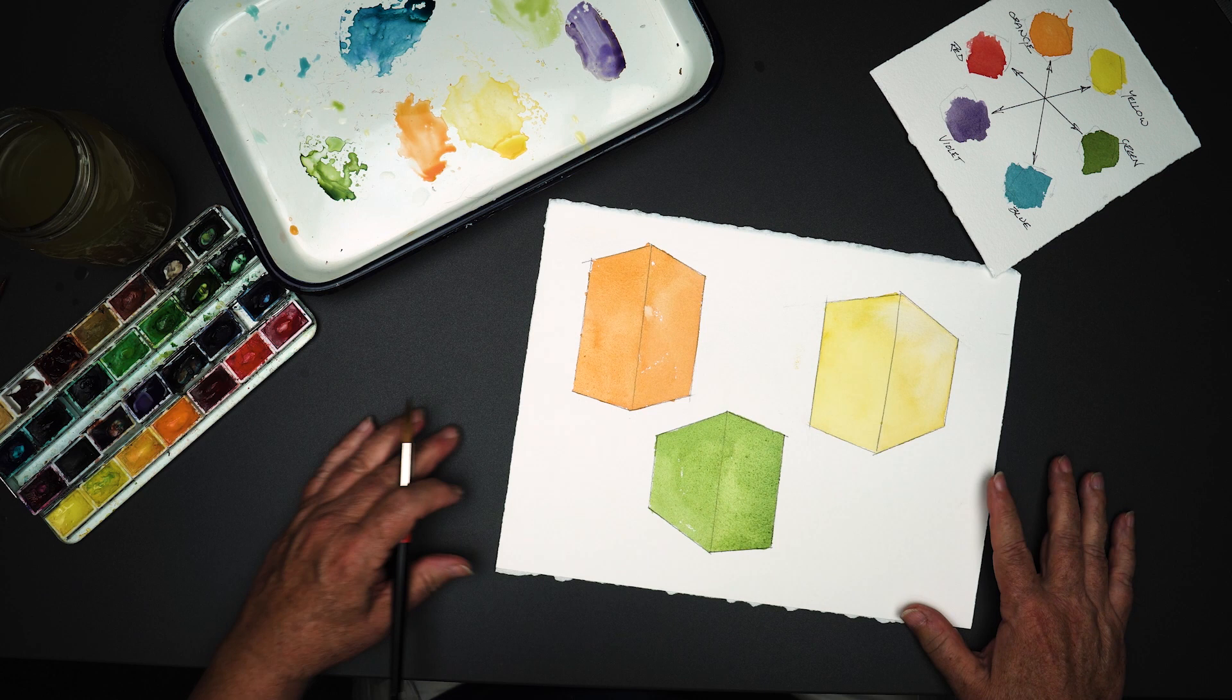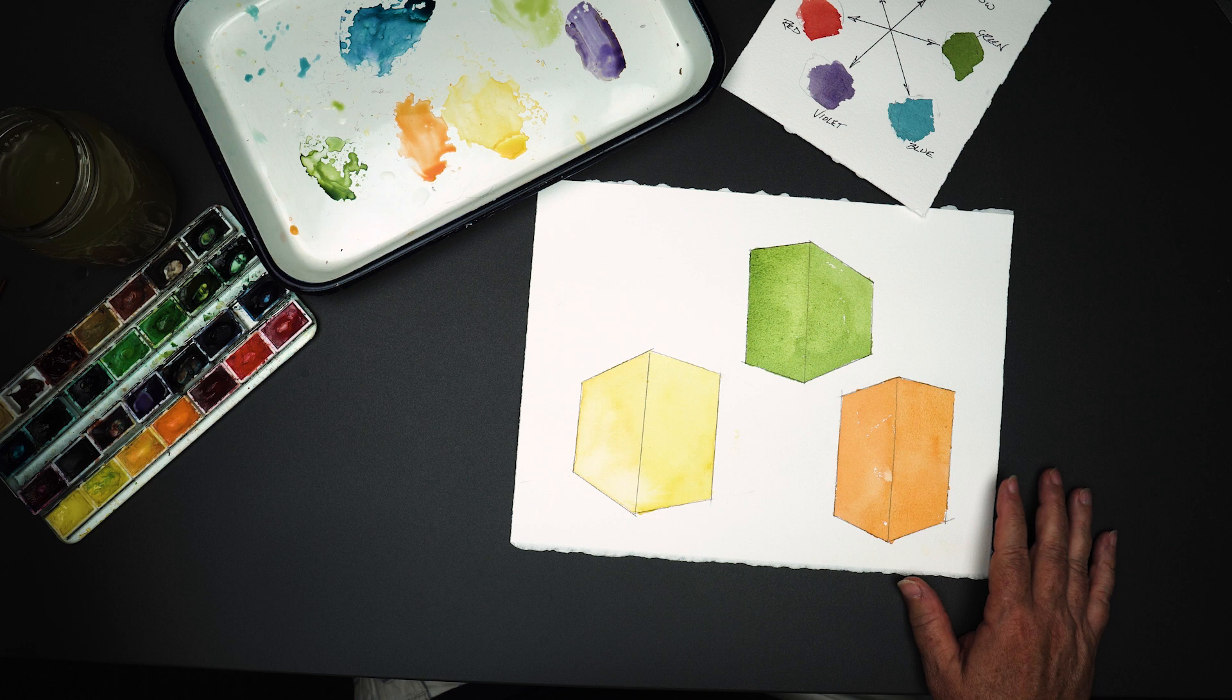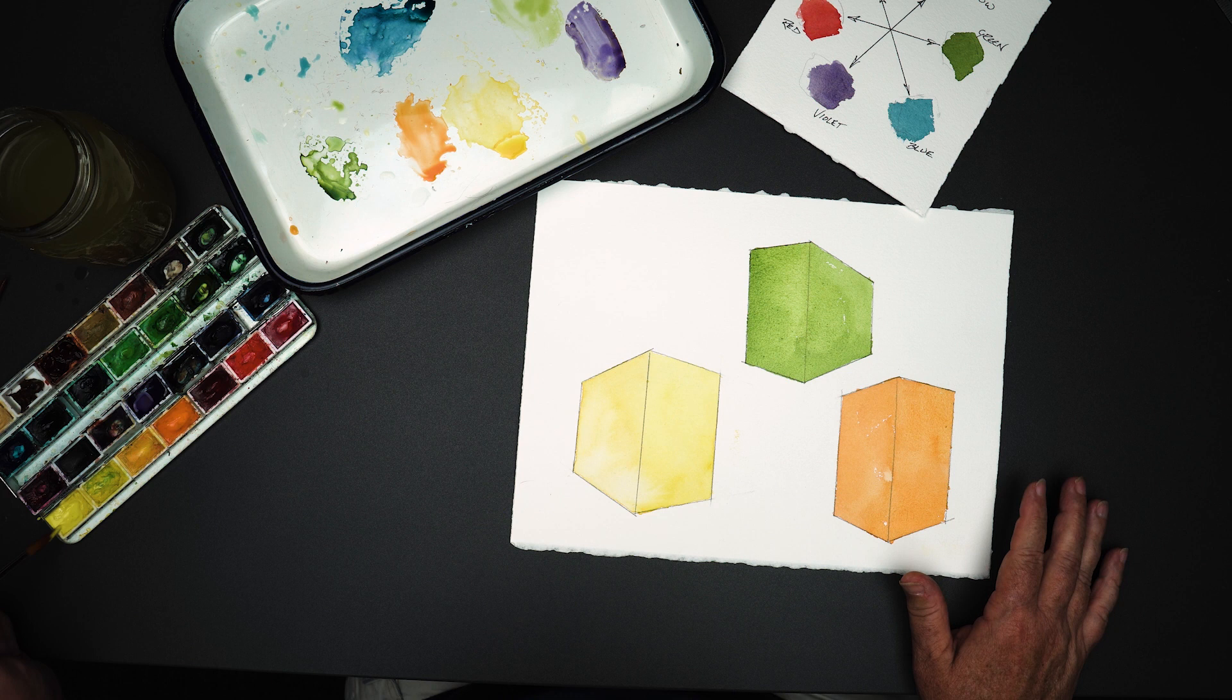All right. Speaking of bananas, I'm going to flip this upside down because it doesn't matter. Speaking of bananas, we're going to go ahead and start with the yellow. Now, what I recommend is that you mix the color into the paint itself.